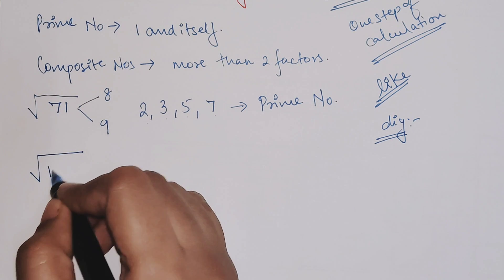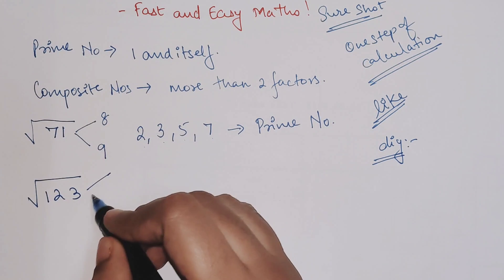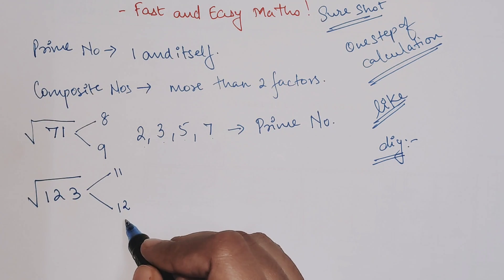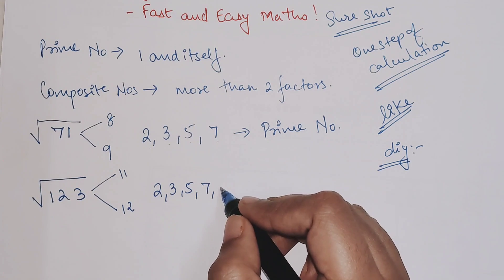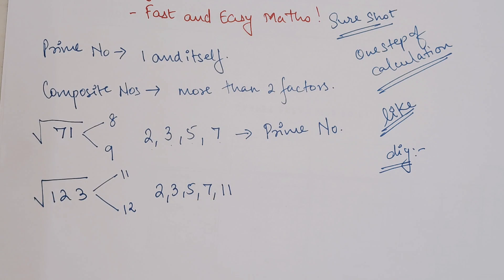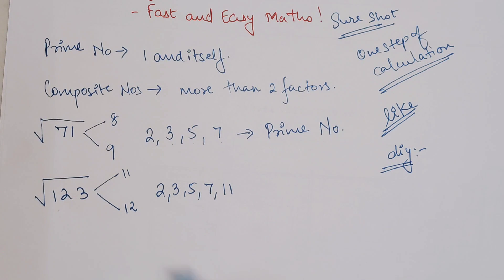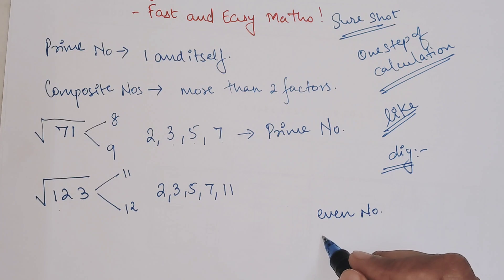Let's take the number 123. Take the square root - it's lying between 11 and 12. We'll take the prime numbers up to the higher number, which is 12: 2, 3, 5, 7, and 11. If you look closely, this is not an even number.